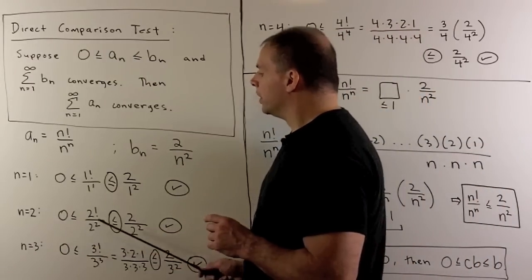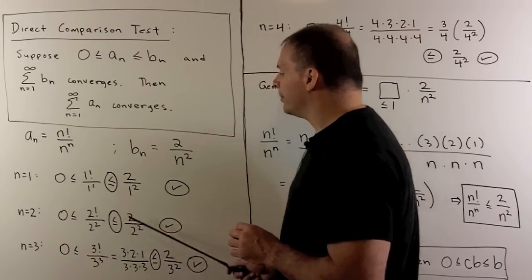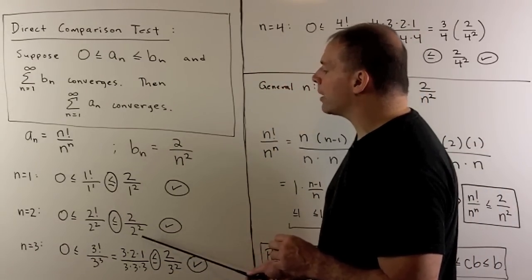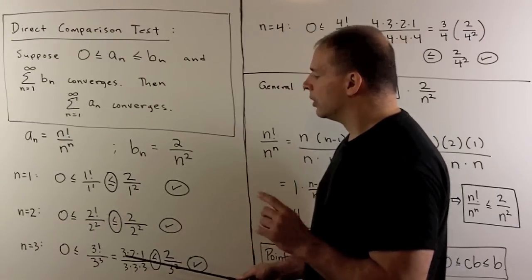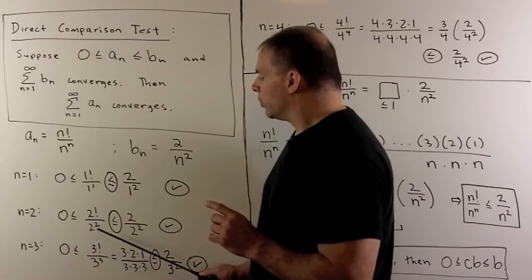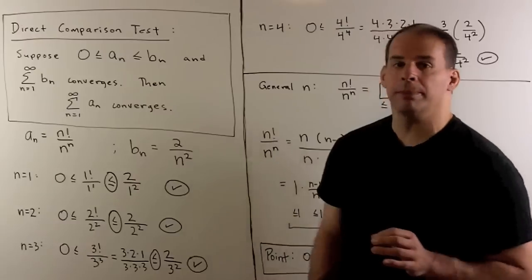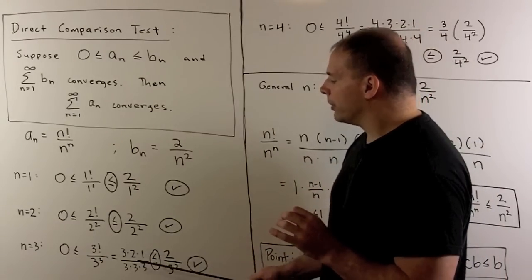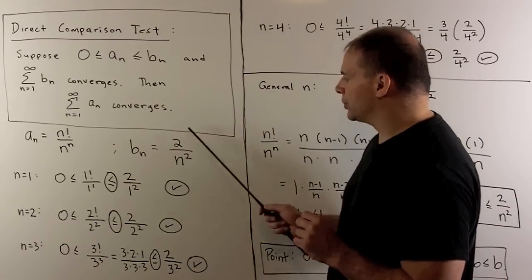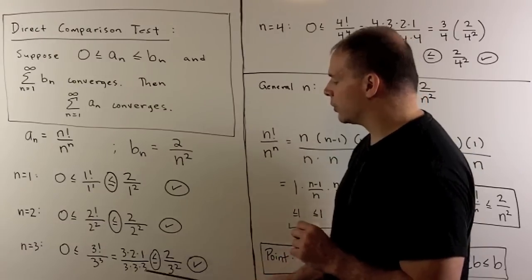For n equal to 2, we have 2 factorial over 2 squared, less than or equal to 2 over 2 squared. 2 factorial is equal to 2, so these are equal. For n equal to 3, we have 3 factorial over 3 cubed. If we write that out, we note that we get 2 over 3 squared, and that's equal to 2 over 3 squared. So that's equal also.